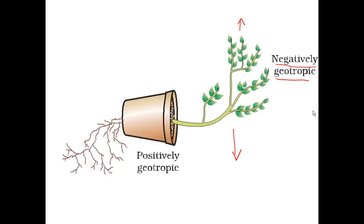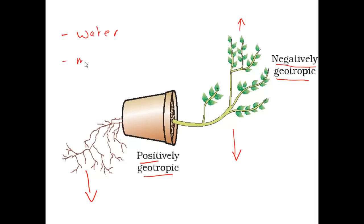How about the roots? The roots are positively geotropic — if gravity pulls downwards, they also grow downwards. The advantage of a positive geotropism is that the plant roots will be better positioned to gain water, which tends to be lower down, to gain mineral ions, which tend to be where the water is, and also to gain anchorage. Those plants would love to stay where they are — they don't want to be blown around like tumbleweed — so anchorage is a big advantage as well.